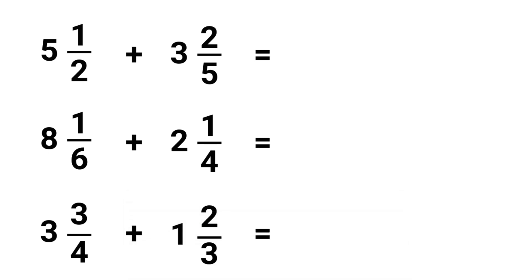Alright, let's find the answers. We start with 5 1/2 plus 3 2/5. So the first thing we are going to do is work out the denominator. 2 times 5 is 10, pretty simple. Next we are going to cross multiply. 1 times 5 is 5 and 2 times 2 is 4.